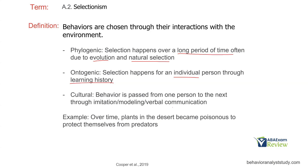For example, with phylogenic selection, plants in the desert became poisonous to protect themselves from predators. Those that did not develop that behavioral trait would eventually die out. That's how we as a species evolve over time. Ontogenic selection, by contrast, is much more specific to each individual person.